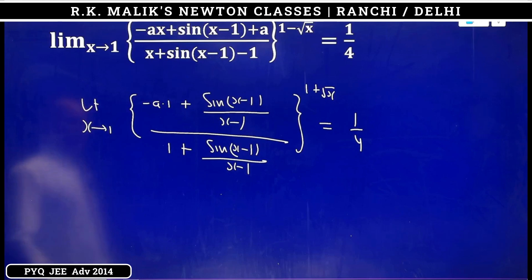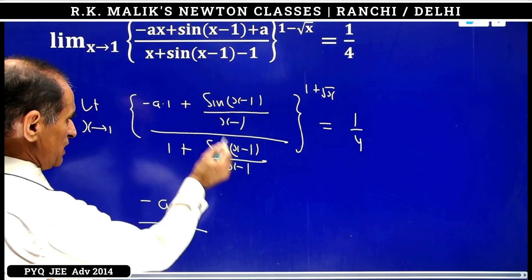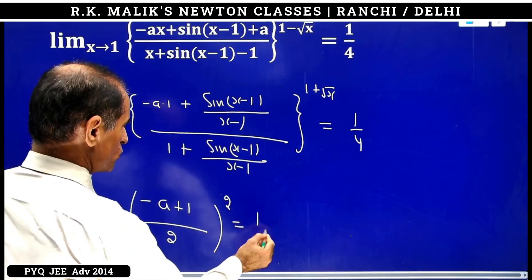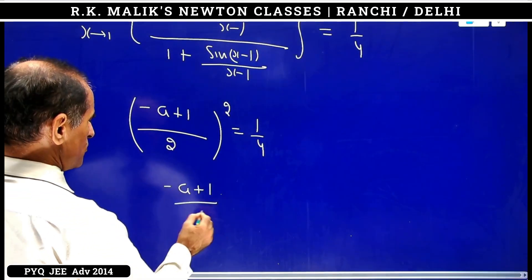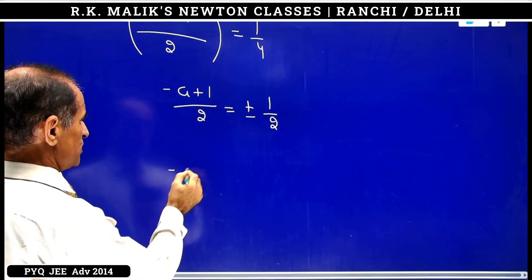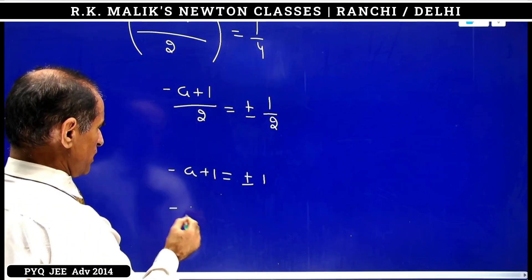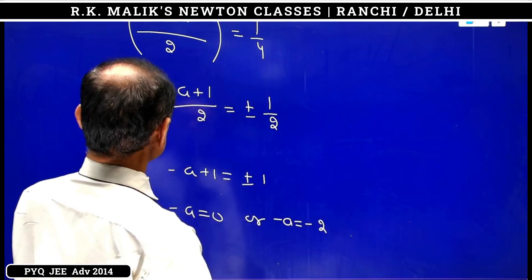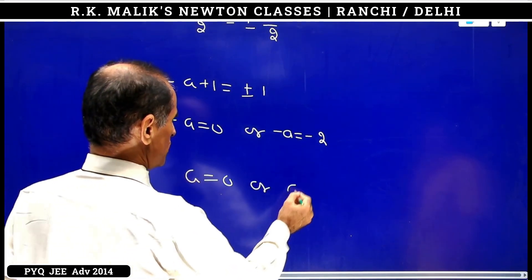As x tends to 1, numerator becomes minus a plus 1, and this becomes 2 whole squared equal to 1 by 4. That gives minus a plus 1 by 2 equals plus minus 1 by 2, so minus a plus 1 equals plus minus 1. Therefore minus a equals 0 or minus a equals minus 2, meaning either a is 0 or a equals 2.